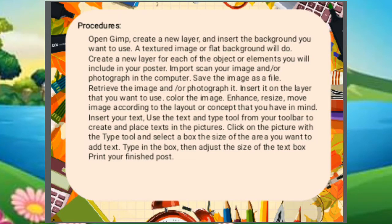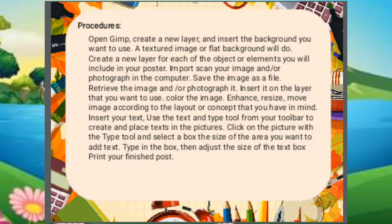Number two: create a new layer for each of the objects or elements you will include in your poster. Import or scan your image and/or photograph into the computer and save the image as a file. Number three: retrieve the image and/or photograph, insert it on the layer that you want to use, and color the image, enhance, resize, and move the image according to the layout or concept that you have in mind.